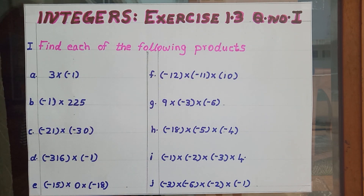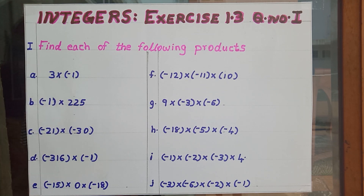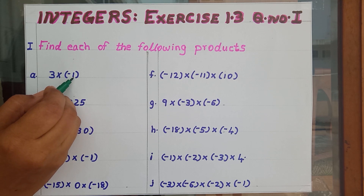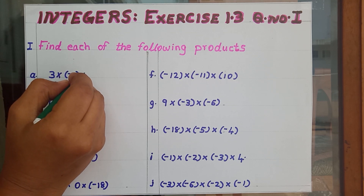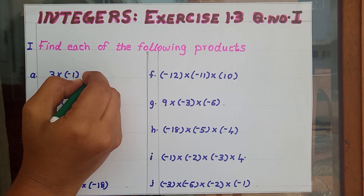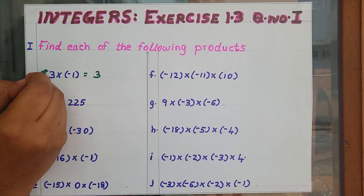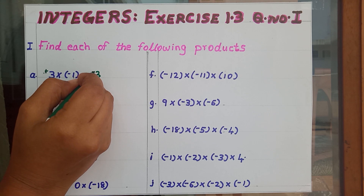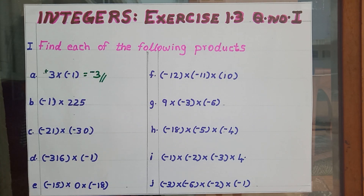First one is 3 into minus 1. First we can find 3 into 1. What is the answer? 3. Then here comes a positive sign — positive into negative gives negative. So our answer is negative 3.